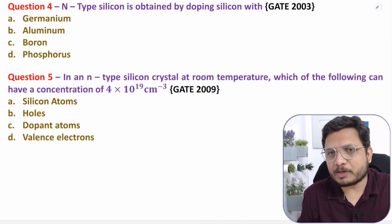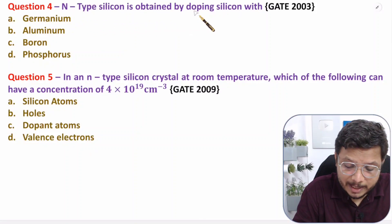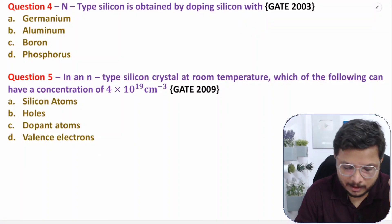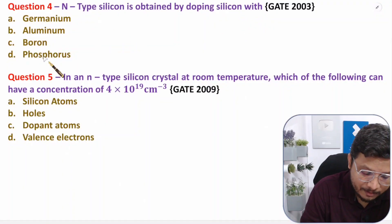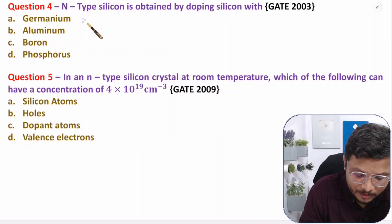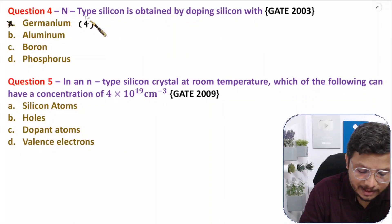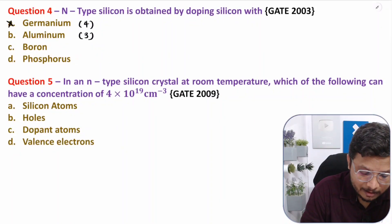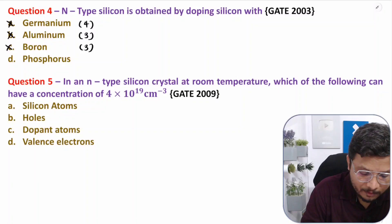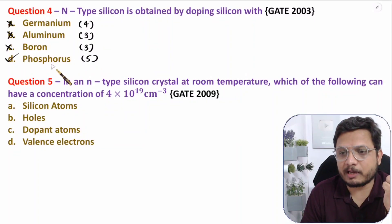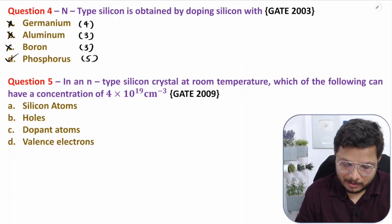The next question: n-type silicon is obtained by doping silicon with — which element? In n-type we add pentavalent impurities. Germanium has four valence electrons — incorrect. Aluminium is trivalent — incorrect. Boron is also trivalent — incorrect. Phosphorus is pentavalent with five valence electrons, so phosphorus is the correct answer.